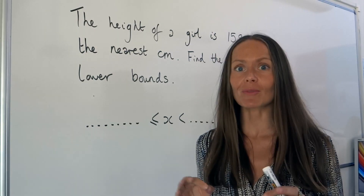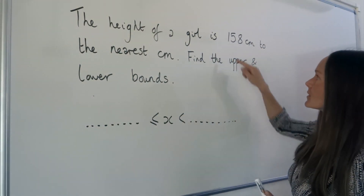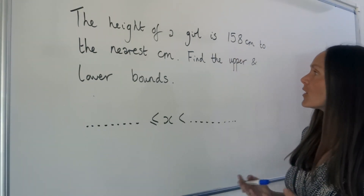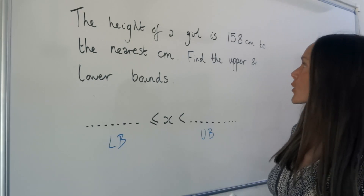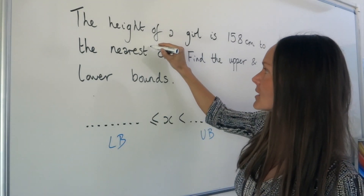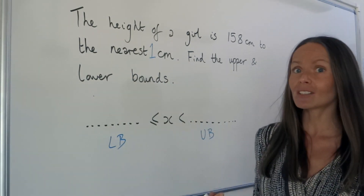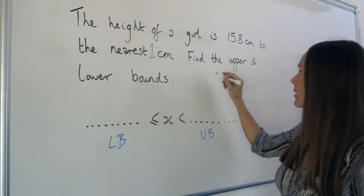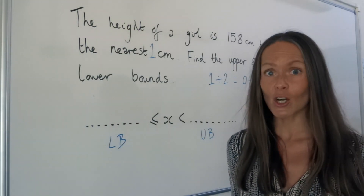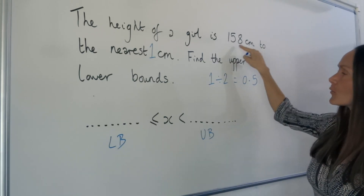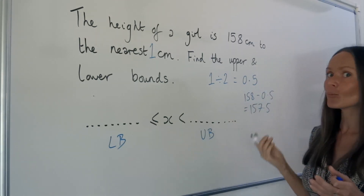In the next few examples, I'm going to show you a technique that will always help you find the lower and upper boundary. The height of a girl is 158 centimetres to the nearest centimetre — find the upper and lower bounds. Because we're rounding to the nearest centimetre, that's the same as rounding to the nearest one centimetre. Take that number — the number one — and divide it by two: 1 divided by 2 gives us 0.5. To find the lower bound, subtract 0.5 from 158: that gives 157.5, which is the lower bound.